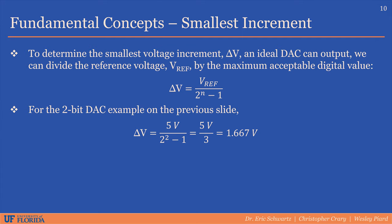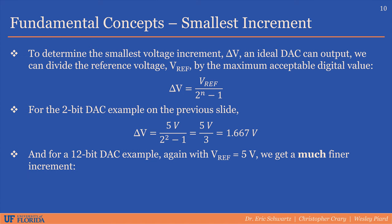For most applications, 1.667 volts is way too large, and thus higher resolution DACs are typically utilized. To show this, let's calculate delta V for a 12-bit ideal DAC. If it has a reference voltage of 5 volts, then the smallest voltage increment is 1.22 millivolts. This is much better than the 2-bit example.